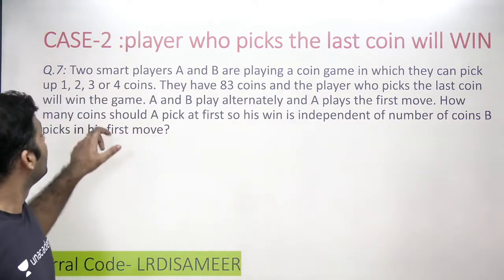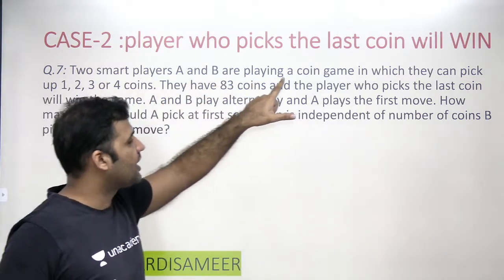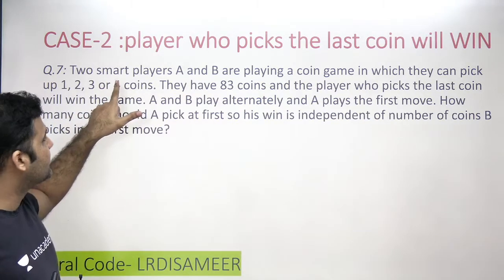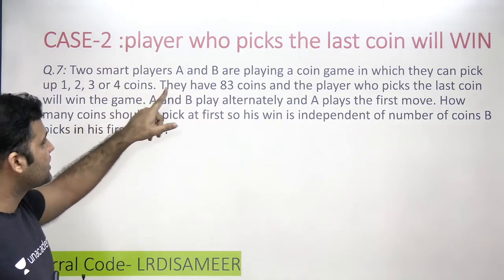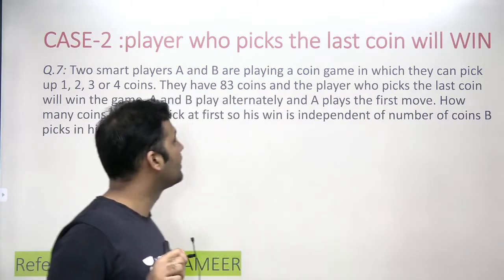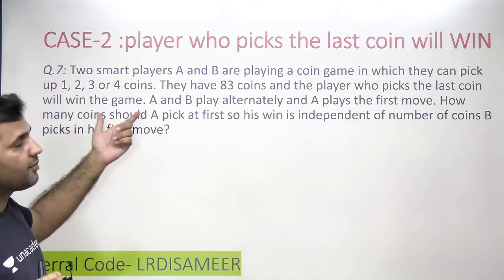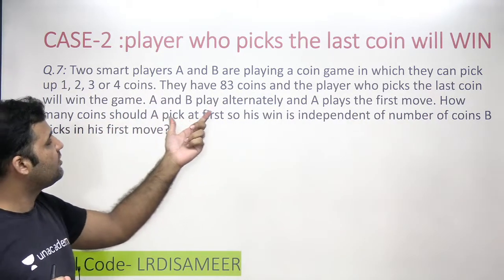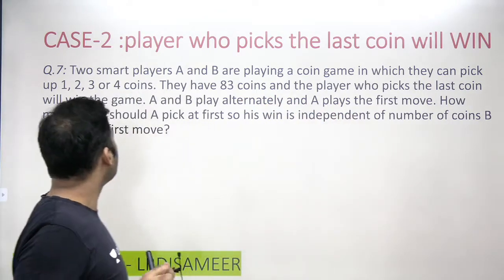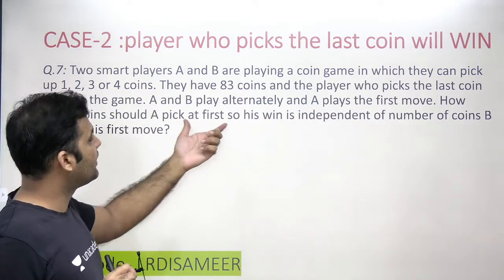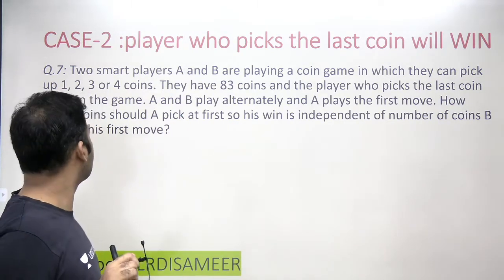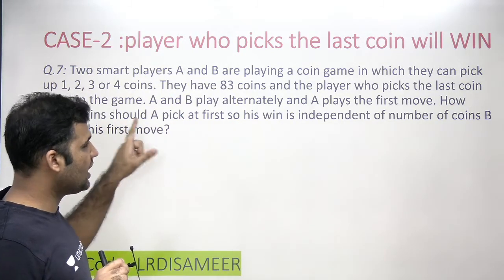Two smart players A and B are playing a coin game in which they can pick one, two, three, or four coins. They have 83 coins and the player who picks the last coin will win the game. A and B play alternately and A plays the first move. How many coins should A pick so that his win is independent of the number of coins B picks?